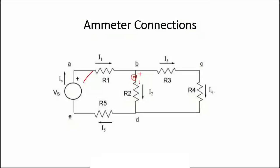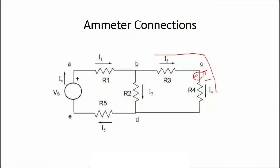Do not forget to restore the previous connection by removing the ammeter. For the third connection, the ammeter is placed in series with R3. At node B we have R1, R2, and the positive of the ammeter, with the negative connected to the removed terminal of R3, thus we can calculate I3. The value of I4 will remain the same as I3 because R3 and R4 form a simple series connection with no other branch, so the same current flows through both.